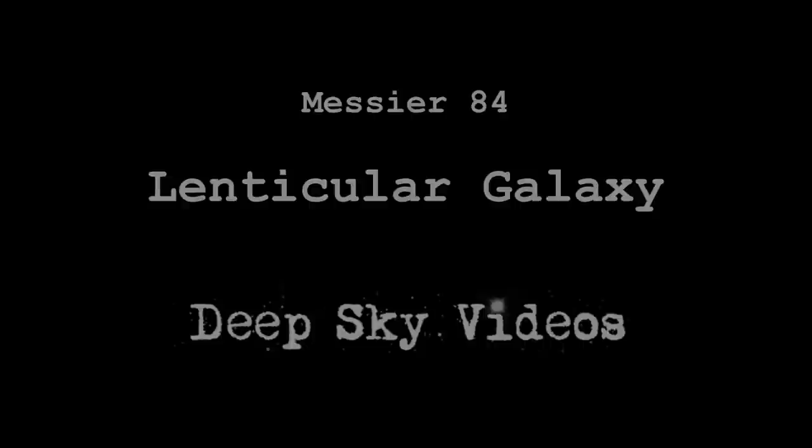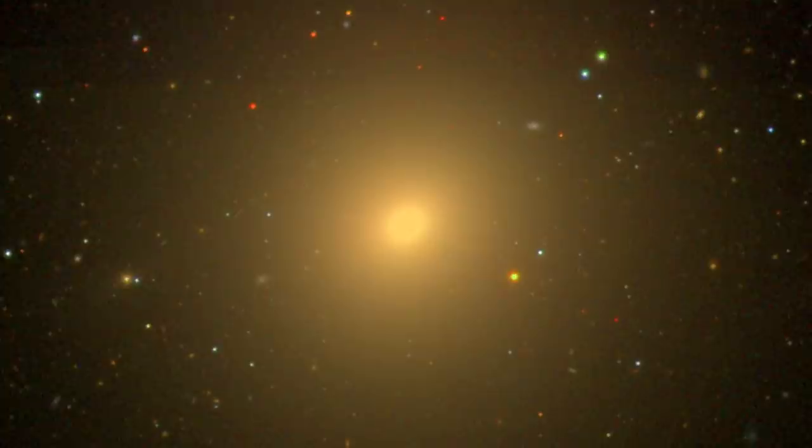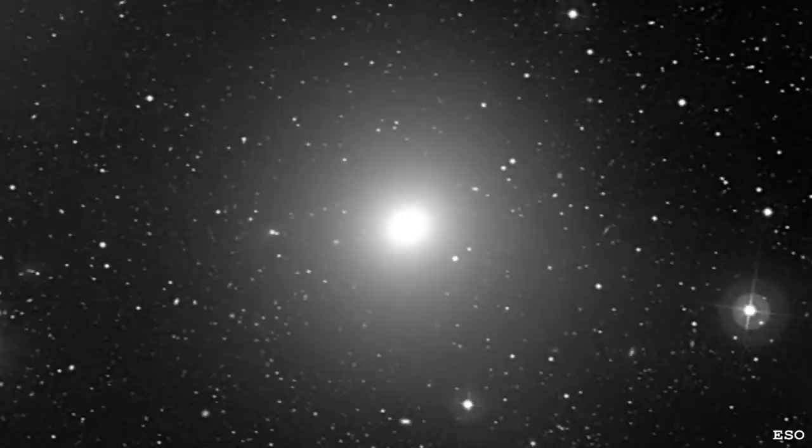So it's Messier 84. This is a galaxy, and when you look at it, it just looks like a nice elliptical or maybe a lenticular galaxy. It's a little hard to particularly classify. It's in the Virgo cluster like many of the Messier galaxies are.